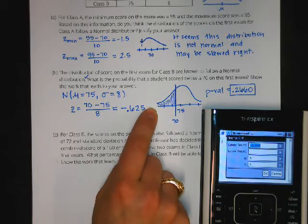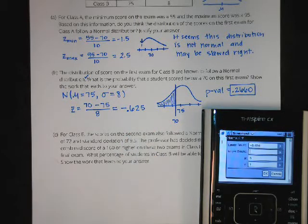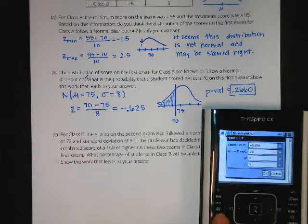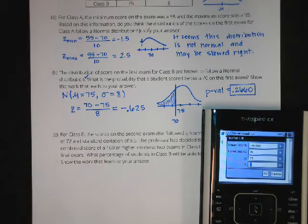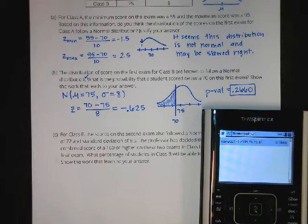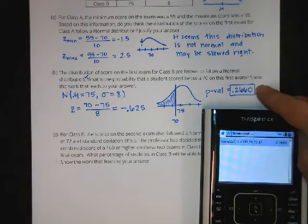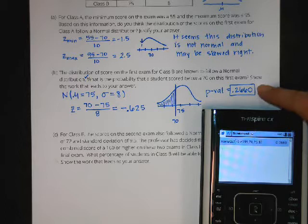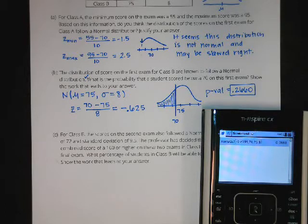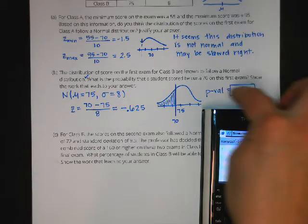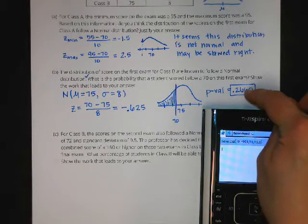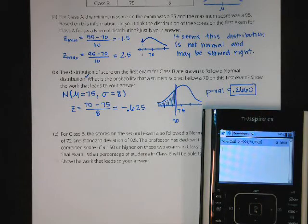My lower bound here is negative infinity or a really, really, really small number. My upper bound is 70 with a mean of 75 and a standard deviation of 8. It gives me the exact same p-value that the table gives, and you can choose either method to calculate this final probability. You can use the table provided in the test or the normal CDF function in your calculator.